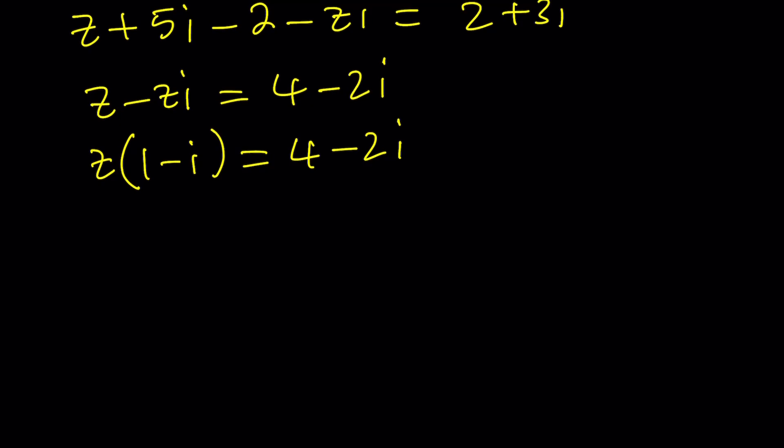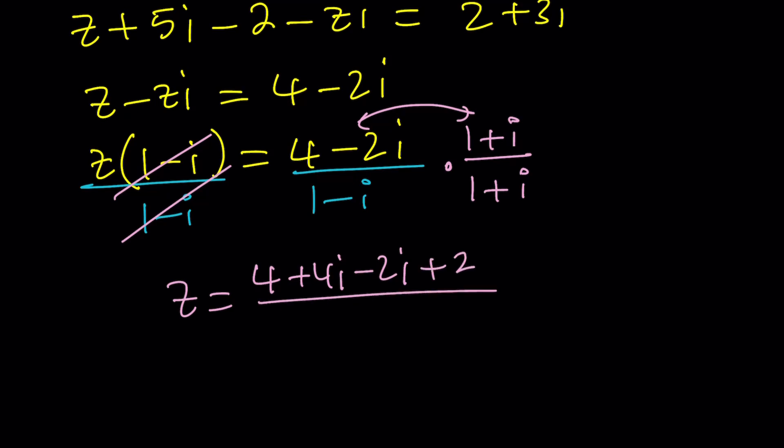We get z times 1 minus i equals 4 minus 2i. And now to be able to solve for z we are supposed to divide. Obviously division is kind of weird with complex numbers because you can't really directly divide. You must use the conjugate. So 1 minus i goes well with 1 plus i. Let's go ahead and multiply top and bottom. And here we're going to have the z by itself. And here we're going to have by distributive property 4 plus 4i minus 2i minus 2i squared which is plus 2 divided by 1 squared plus 1 squared.